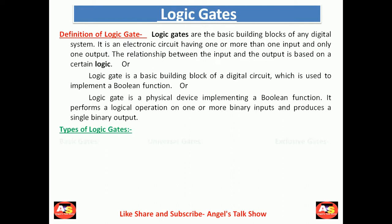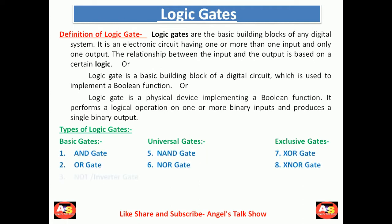We have several types of logic gates in digital electronics, and all of these gates are classified into three main categories: basic gates, universal gates, and exclusive gates. The examples of basic gates are AND gate, OR gate, NOT (or inverter) gate, and buffer gate. NAND gate and NOR gate are in the category of universal gates. EXOR gate and EXNOR gate — also known as exclusive OR and exclusive NOR gates — are in the category of exclusive gates.